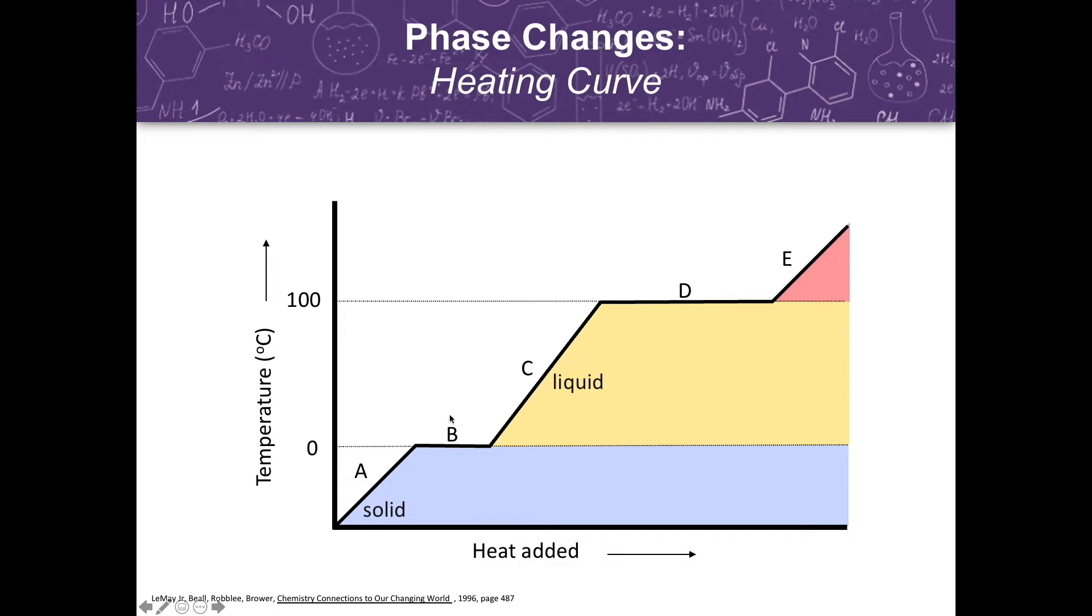Added heat increases the temperature of the liquid until its boiling point is reached at point D. More heat causes the liquid to boil to form a gas without increasing its temperature. That is the plateau from point D to point E. Additional heat then increases the temperature of the gas.